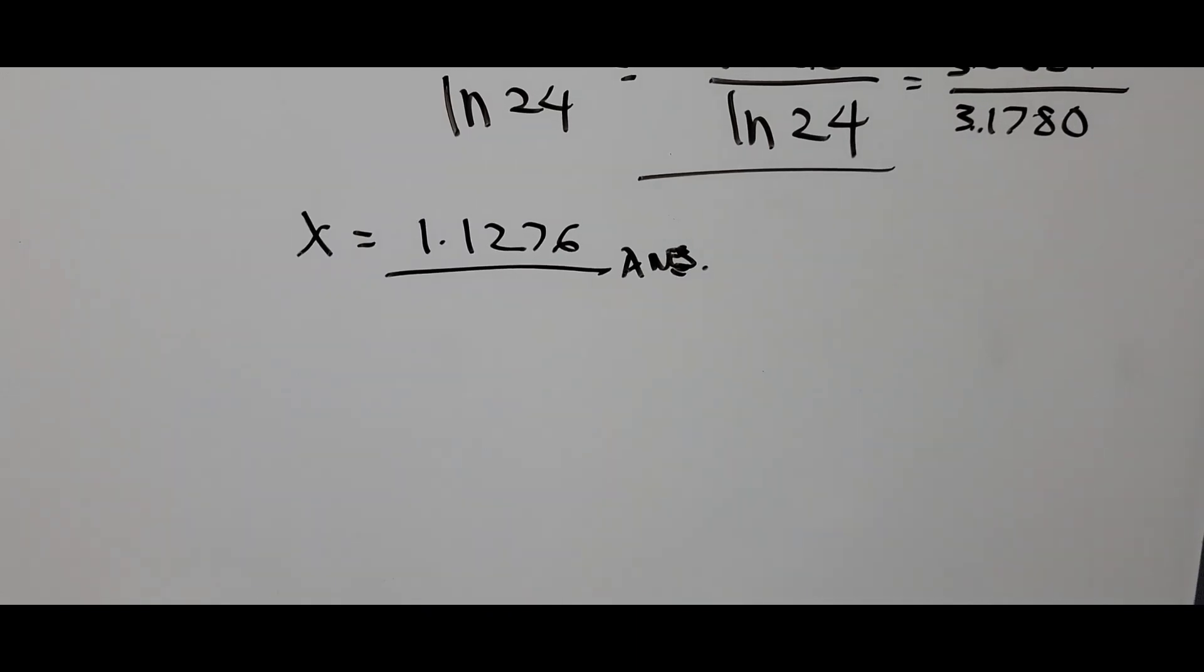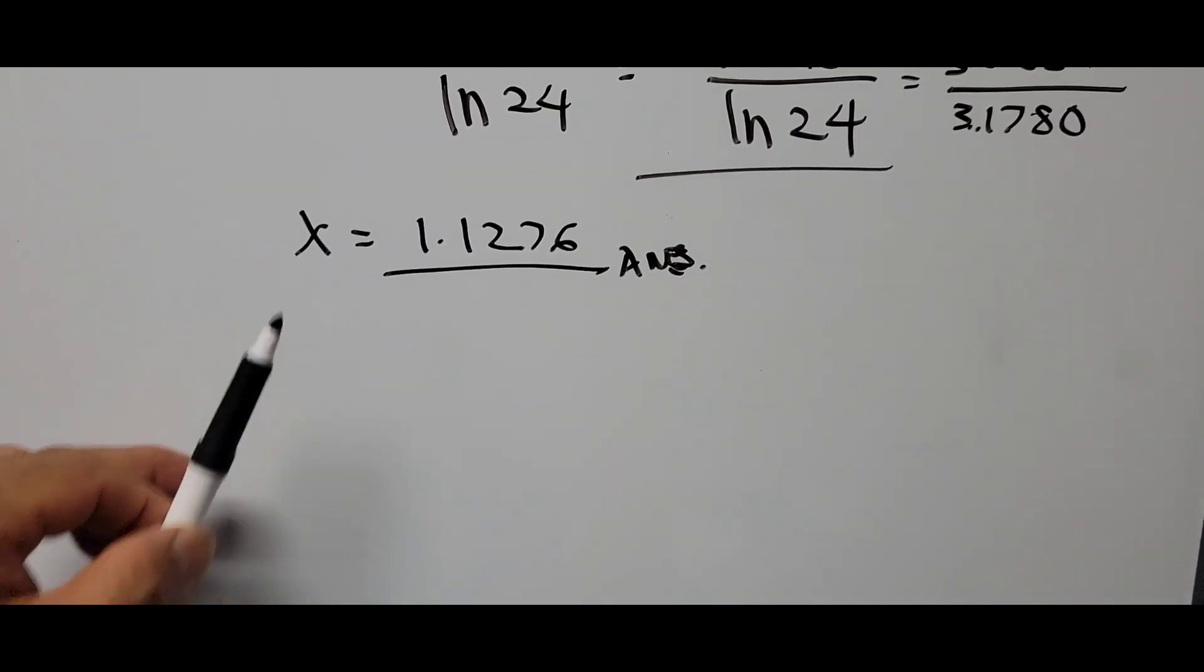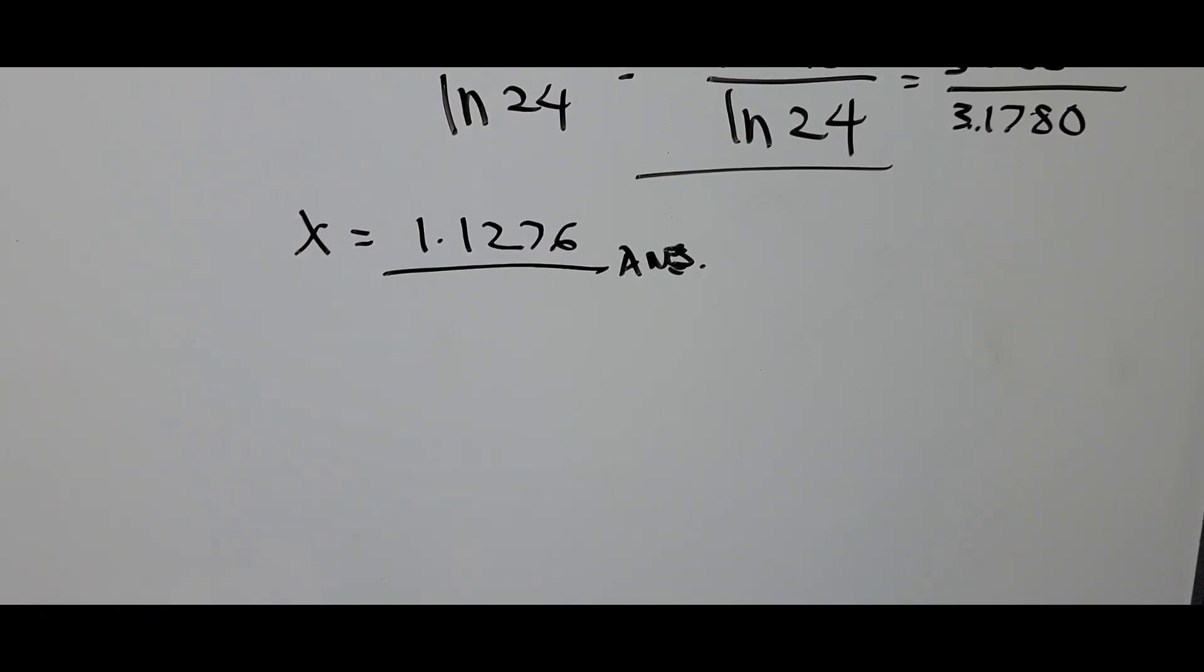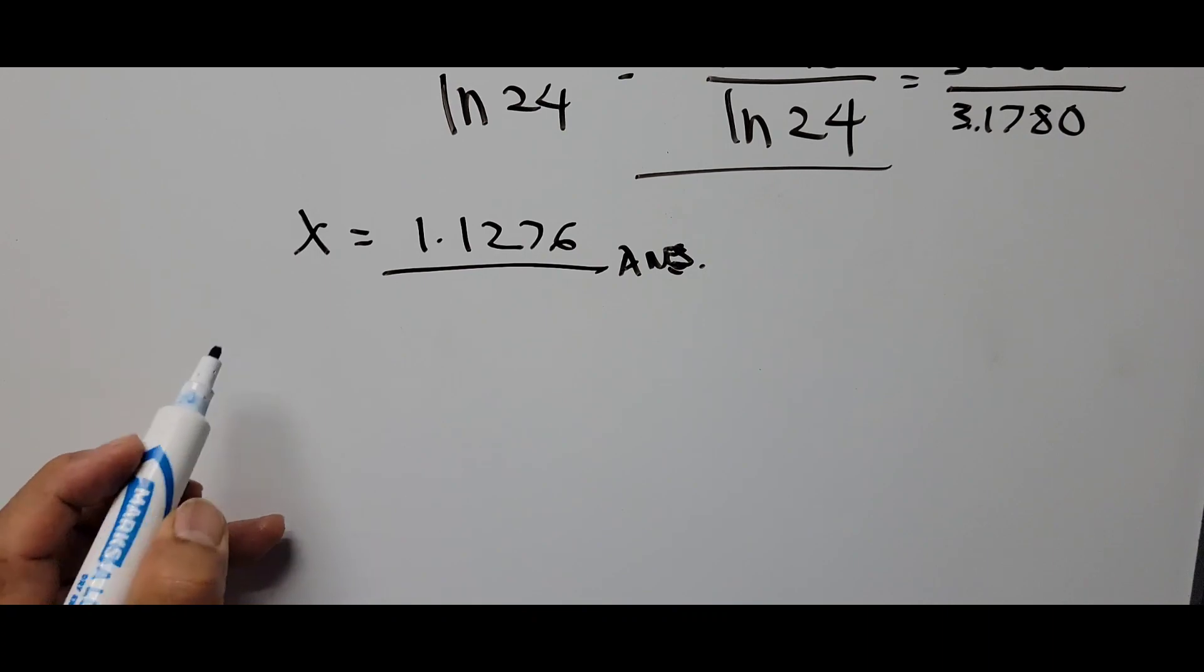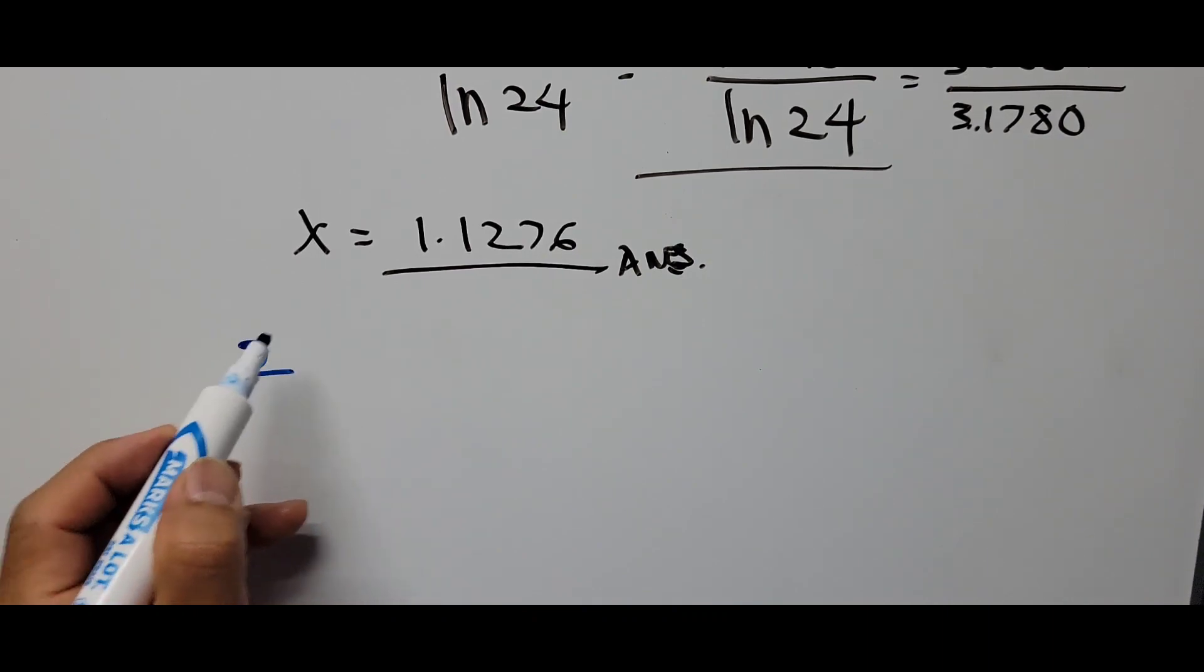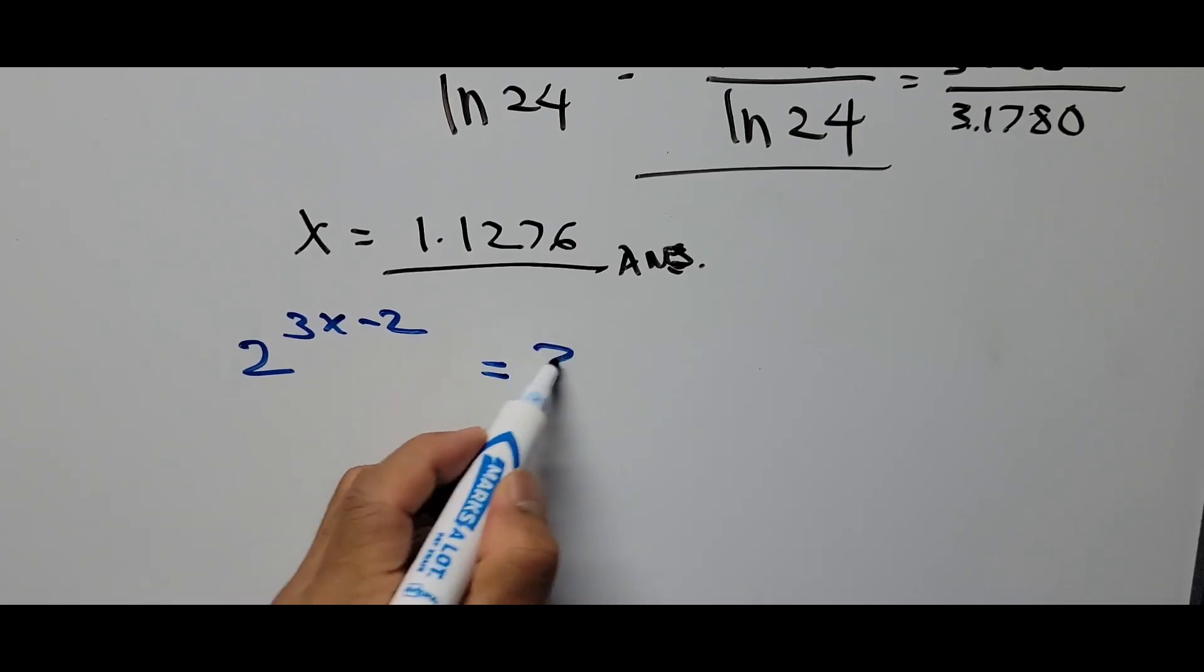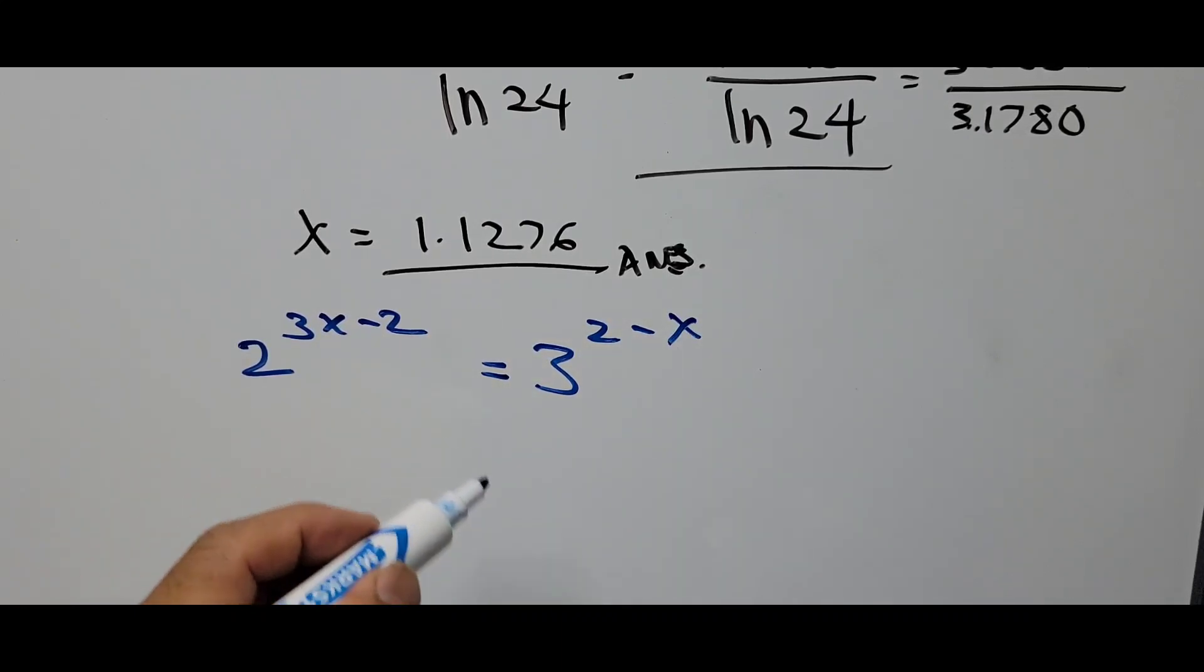Now the next thing to do is to verify our answer. We have to substitute the value of x of the original equation. The original equation was 2 raised to 3x minus 2 equals 3 raised to 2 minus x, so we have to substitute the value of x on that.